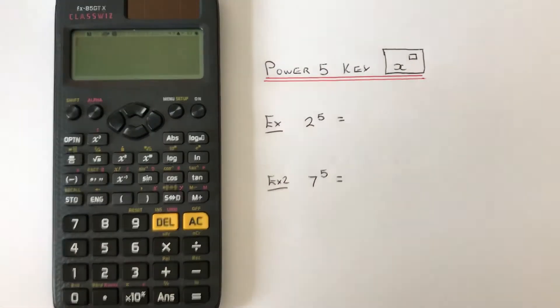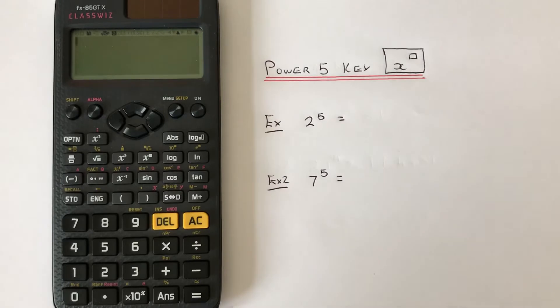Hi guys, welcome back. This is Maths 3000. Today I'm going to show you how to work out a power of five using the power key on a Casio scientific ClassWiz calculator.